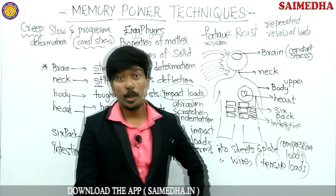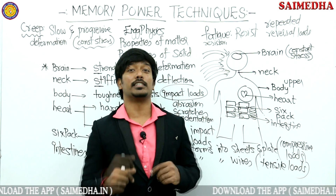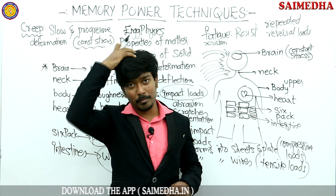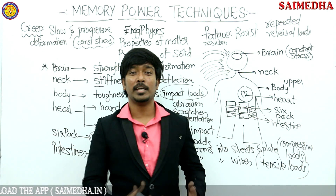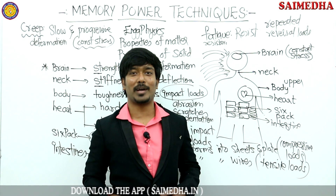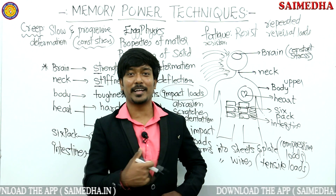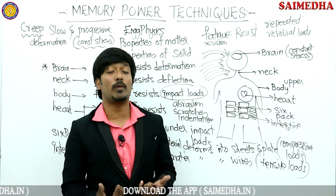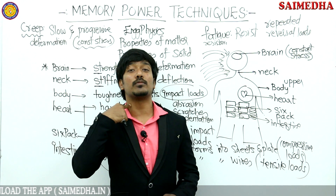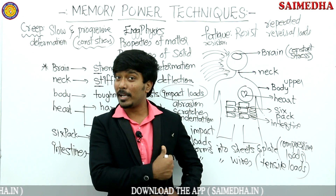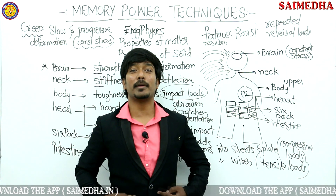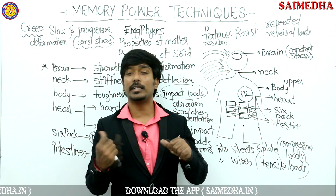Now revise in your mind — no looking at the board. What is the uppermost body part? Brain. Then neck, body, heart, six-pack, intestines. Properties: strength, stiffness, toughness, hardness and brittleness, malleability, ductility, creep, and fatigue.